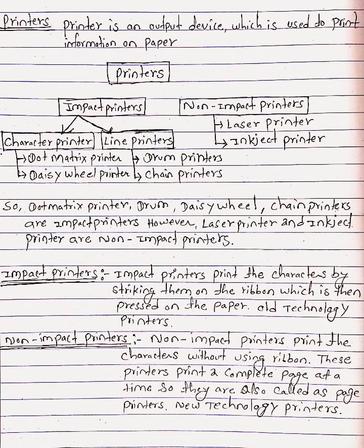Non-impact printers include laser printers and inkjet printers. So dot matrix, daisy wheel, drum, and chain printers are impact printers, while laser printers and inkjet printers are non-impact printers.